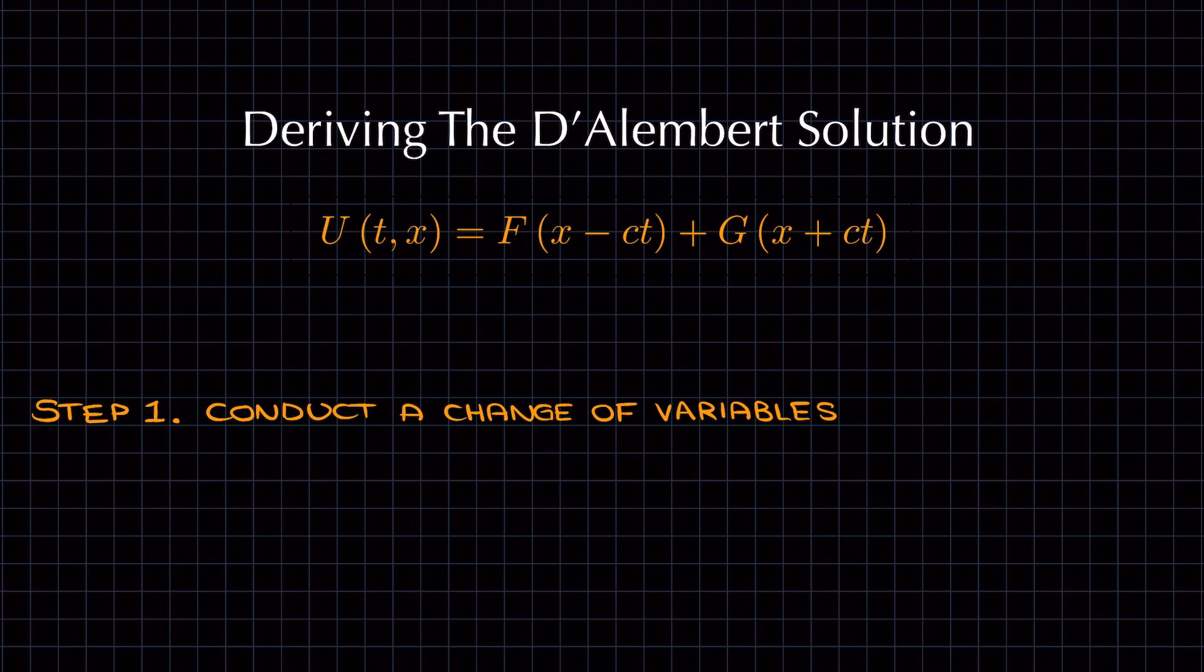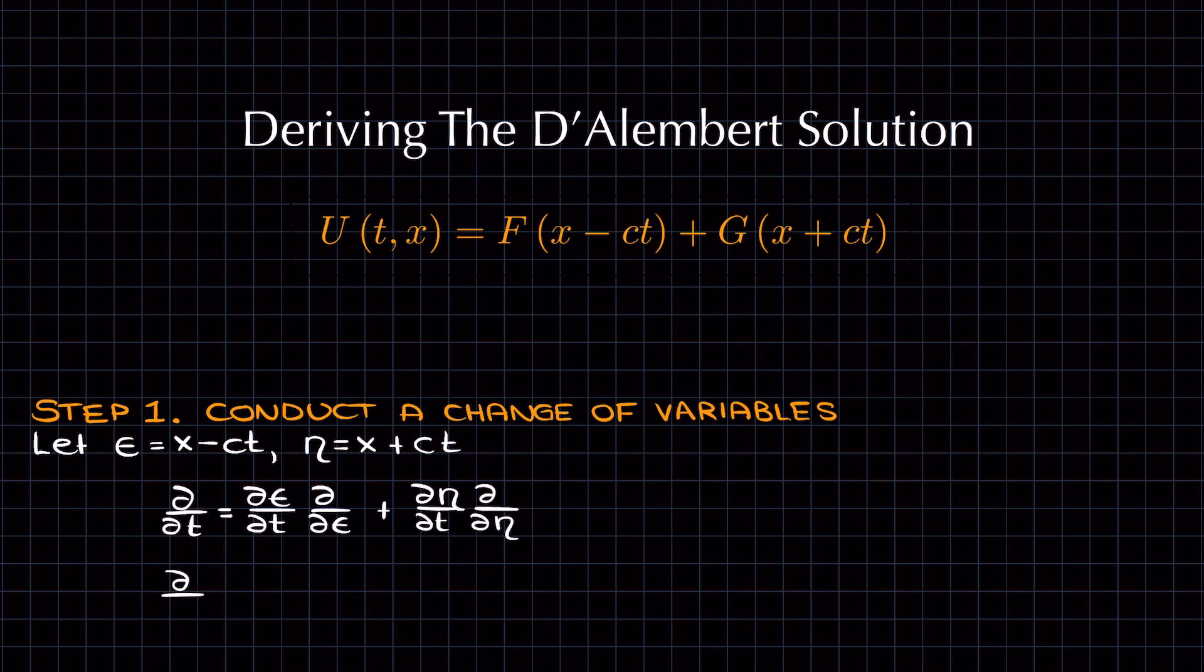As you know, the wave equation consists of two second-order partial derivatives with respect to a spatial dimension x and time t. The first thing we're going to do is conduct a change of variables using the chain rule, with the aim of writing d/dt and d/dx with respect to our new variables epsilon and eta. Let epsilon equal x minus ct and eta equal x plus ct, where c is some constant. Now let's use the chain rule to find d/dt and d/dx.